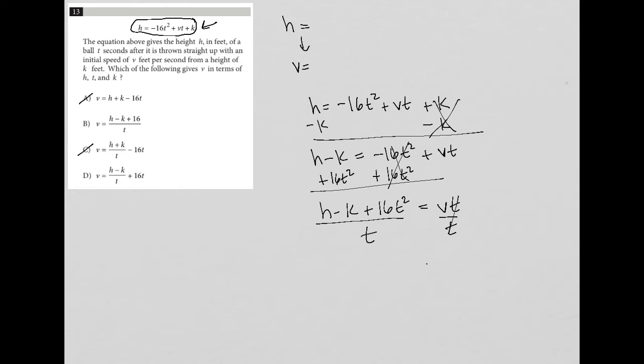And then lastly, I can divide by t in order to get v alone here. So t's cross out, leaving me with the v that I wanted.